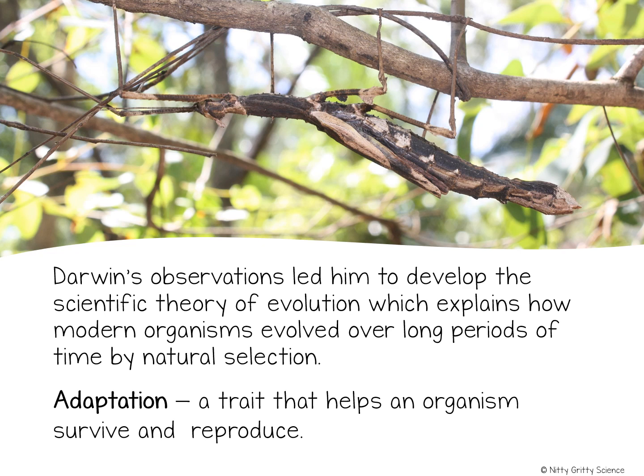For example, Lamarck proposed that giraffes by using or not using certain body parts would then develop certain characteristics. So he thought if there were short trees, the giraffe's neck would not need to grow so long, resulting in some giraffes with short necks and some with long necks. While Lamarck was incorrect in his theory, it did help Darwin develop his own scientific theory of evolution, and Darwin was able to find evidence when he reached the Galapagos Islands.